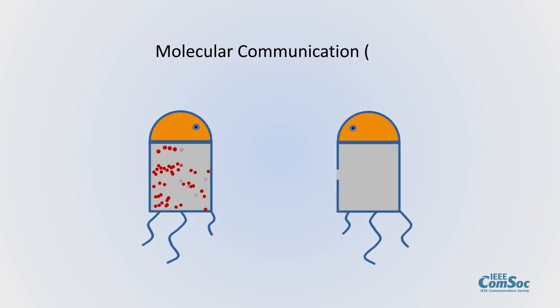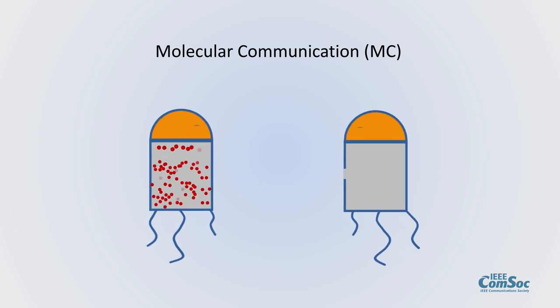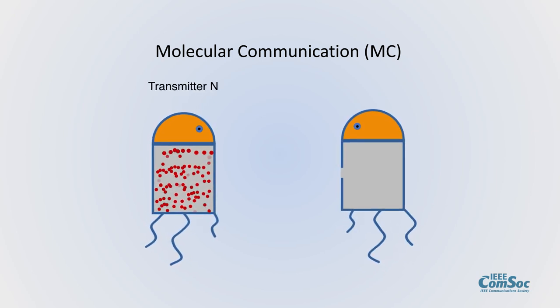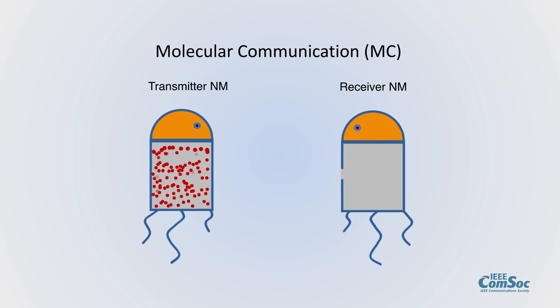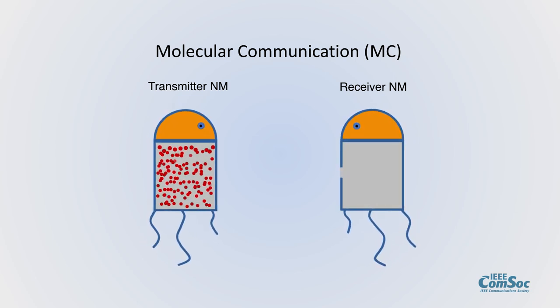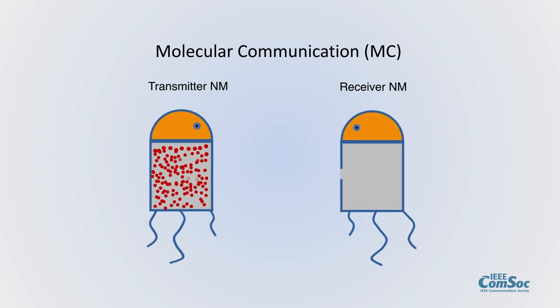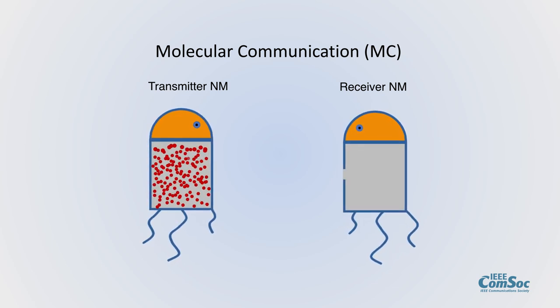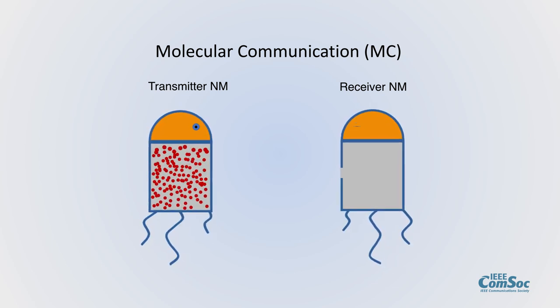In this animation, these are the transmitter and receiver nanomachines. The transmitter nanomachine has a container full of signaling molecules shown with red circles. When the control unit opens the gate, molecules flow out.